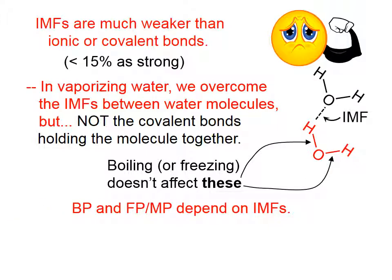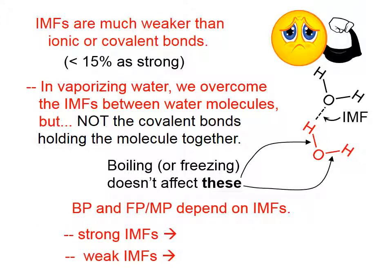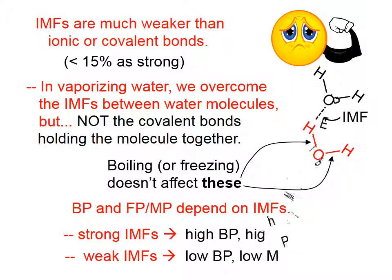Boiling point and freezing or melting point depend on IMFs. The stronger the IMFs — if you look at the picture on the right side of the screen — if the intermolecular force between two particles is very strong, then the boiling point is going to have to be much higher. Strong IMFs lead to high boiling points and high melting or freezing points. If the intermolecular forces are very weak, the boiling point can be very low, and so can the melting and freezing points.